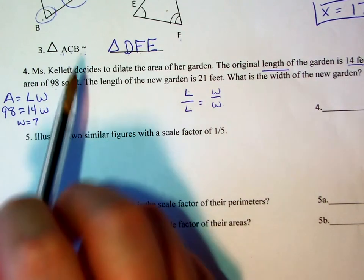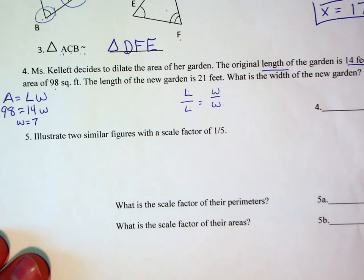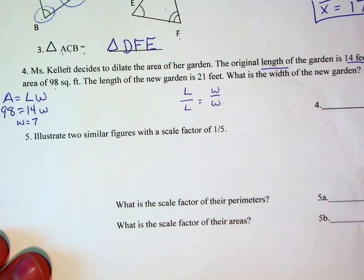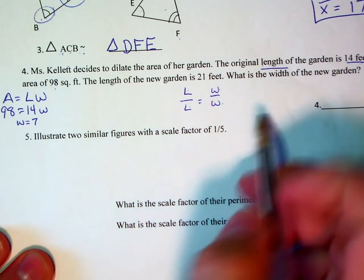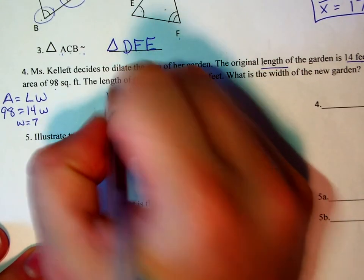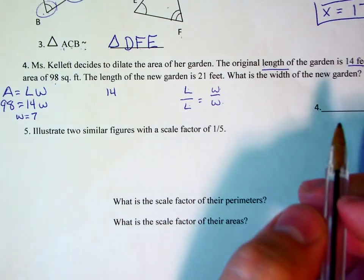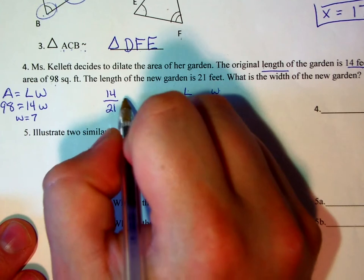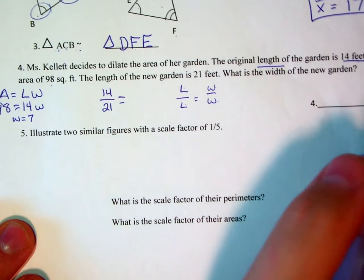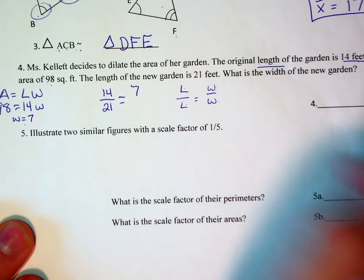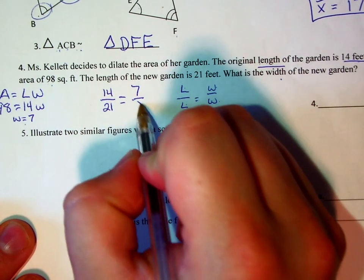So we now know that this original garden had a length of 14 feet and a width of 7 feet. That should give us enough information to fill in our proportion. So the length of the original garden is 14 feet. The length of the new garden is going to be 21 feet. The width of the original garden is 7 feet. We want to know what the width of the new garden is, so that will be our variable.